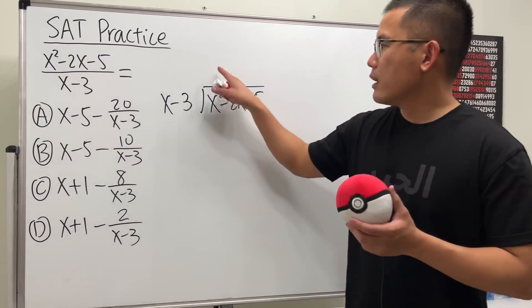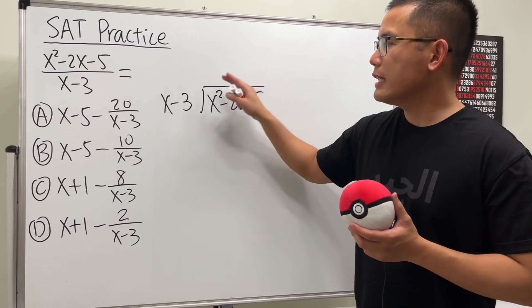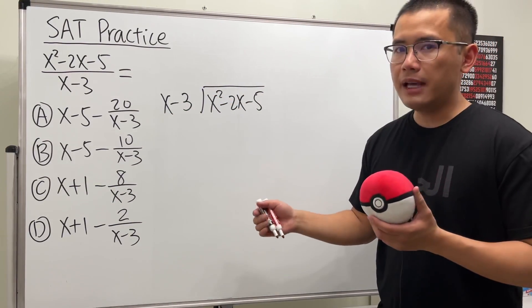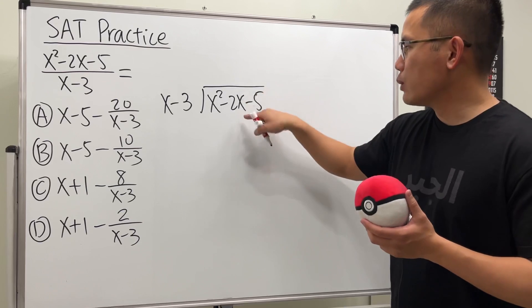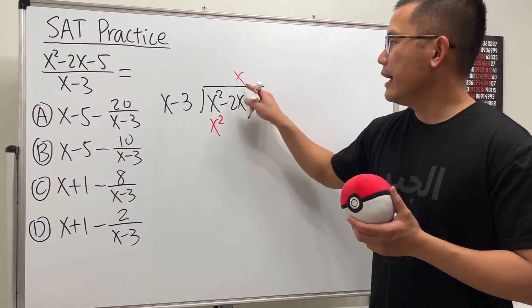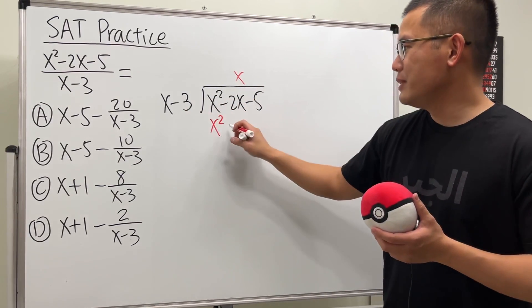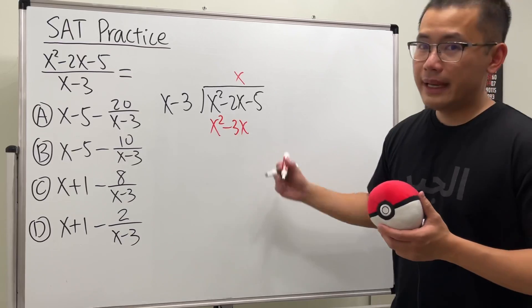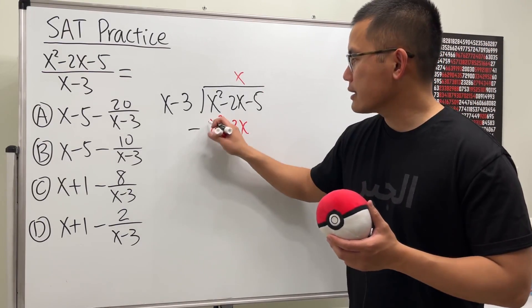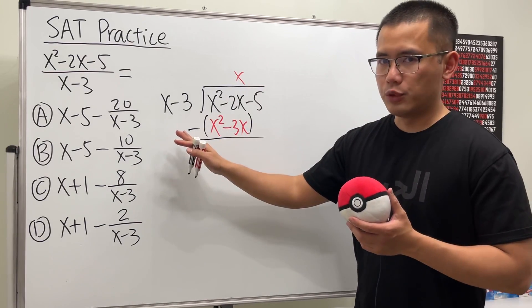All right, so to figure out this right here, we will have to ask ourselves what times x will give us x squared? x times x will give us x squared. And let's line up with the x term. x times x is x squared. And then don't forget to multiply this end up with x squared. x times negative 3 is negative 3x. And then when we do long division, we subtract, and then let's put the parentheses like this. x squared minus x squared is just zero.